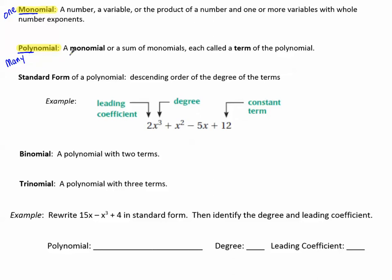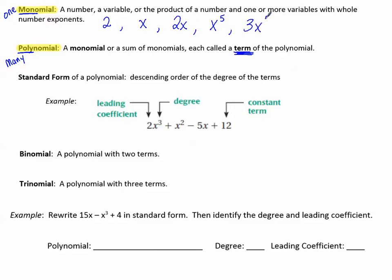A polynomial is a monomial or a sum of monomials, each called a term of the polynomial. A monomial, for example, could be just two — a number — or a variable like x, or a product of a number and a variable like 2x. It has to have whole number exponents, so it could be x to the 5th or 3x to the 5th.